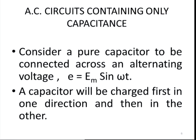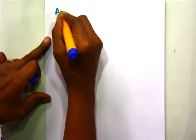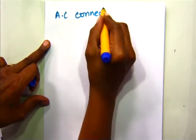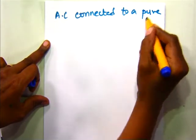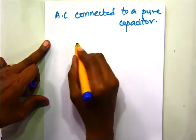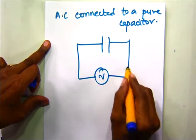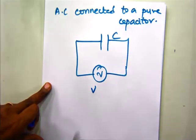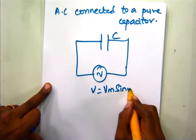Next, we will see AC circuits containing only capacitance. We are going to consider a pure capacitor which is connected across an alternating supply V equal to Vm sin omega t. A pure capacitor is an ideal case — it won't have any losses. We consider a pure capacitor C connected to an alternating voltage supply of V equal to Vm sin omega t.